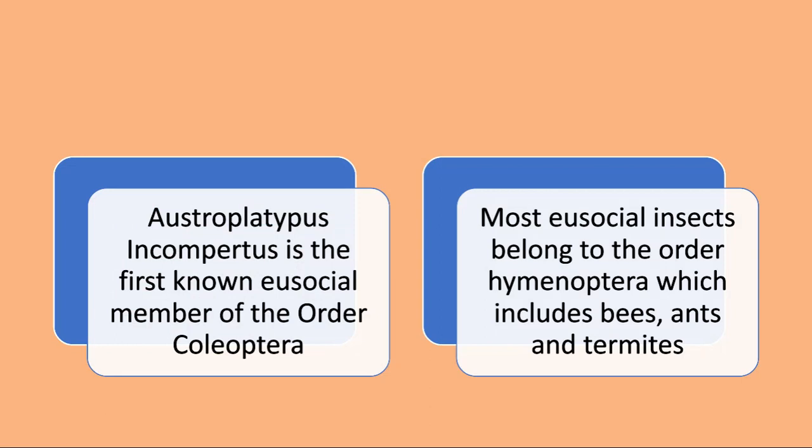Most eusocial insects belong to the order Hymenoptera. This includes bees, wasps, and ants. Austroplatypus incompertus is special because it is the first eusocial insect belonging to the order Coleoptera.